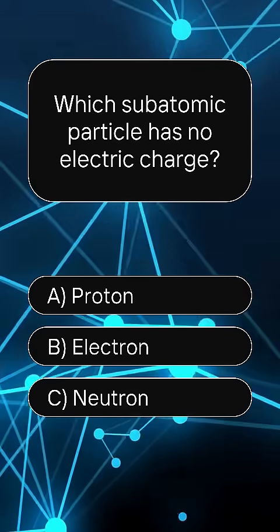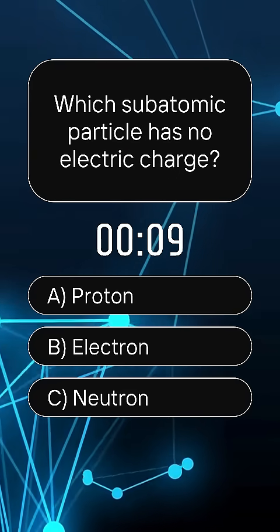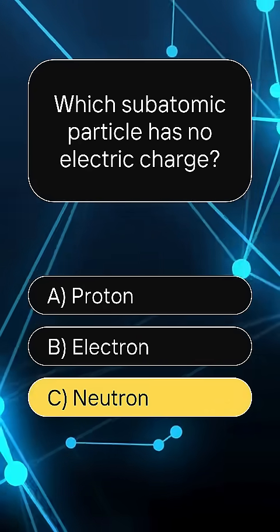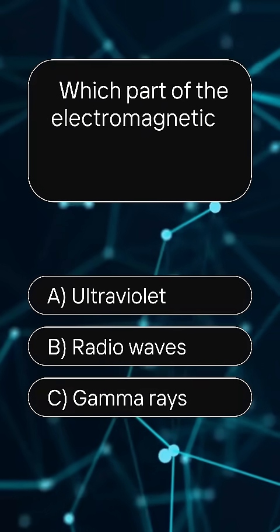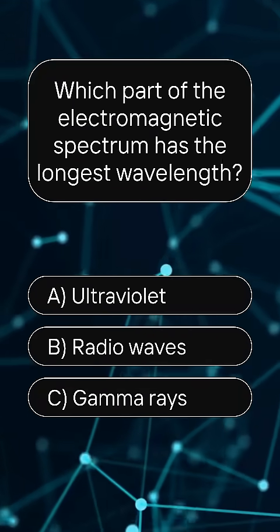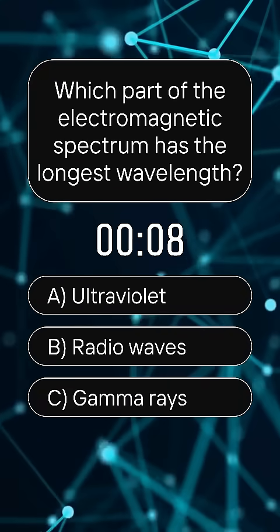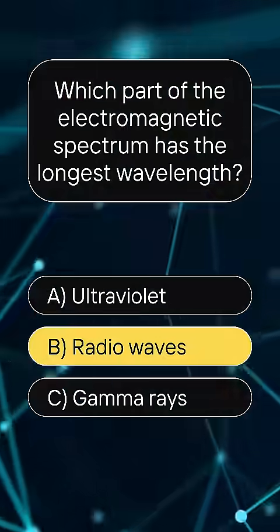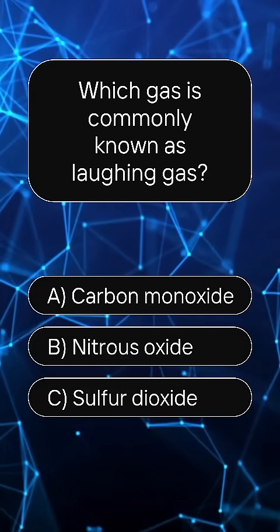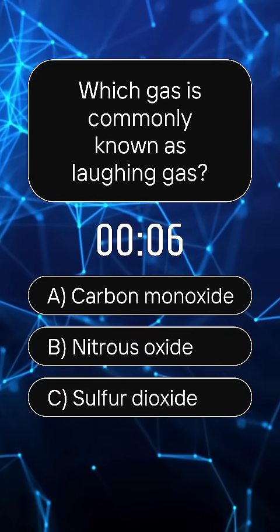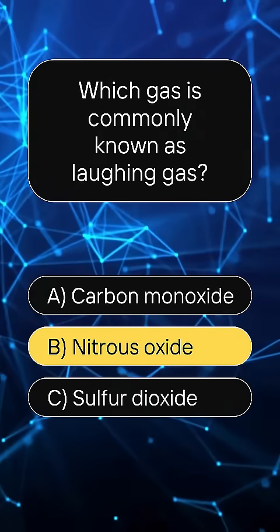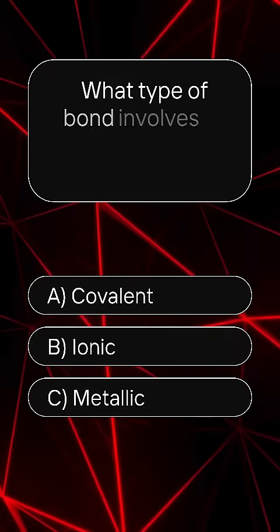Which subatomic particle has no electric charge? Answer: C, neutron. Which part of the electromagnetic spectrum has the longest wavelength? Answer: B, radio waves. Which gas is commonly known as laughing gas? Answer: B, nitrous oxide.